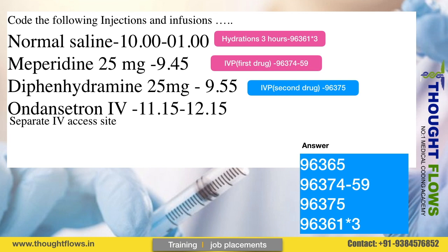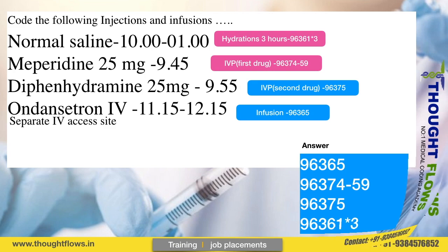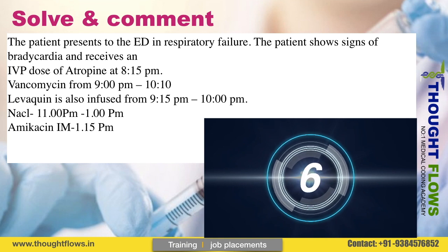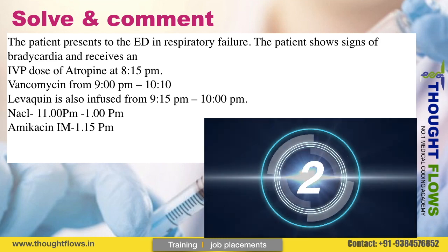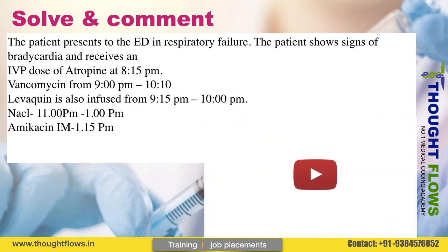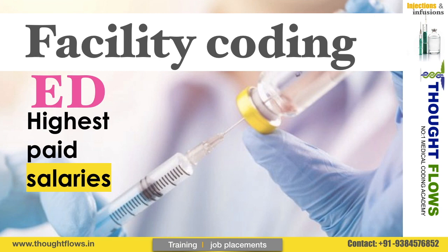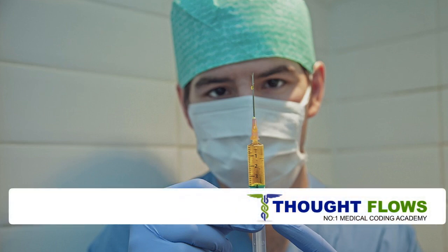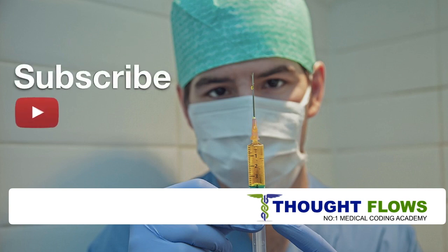For IV push, the add-on code 96375 is used alongside the primary code 96365. Friends, try to solve the sample and post your answer in the comment section. To summarize: first check whether the patient is chemo or non-chemo, confirm the hierarchy, ensure only one primary code per medical record, use modifier 59 in applicable situations, and always document start time and stop time. ED facility coding for hydrations, infusions, and injections plays an important role.